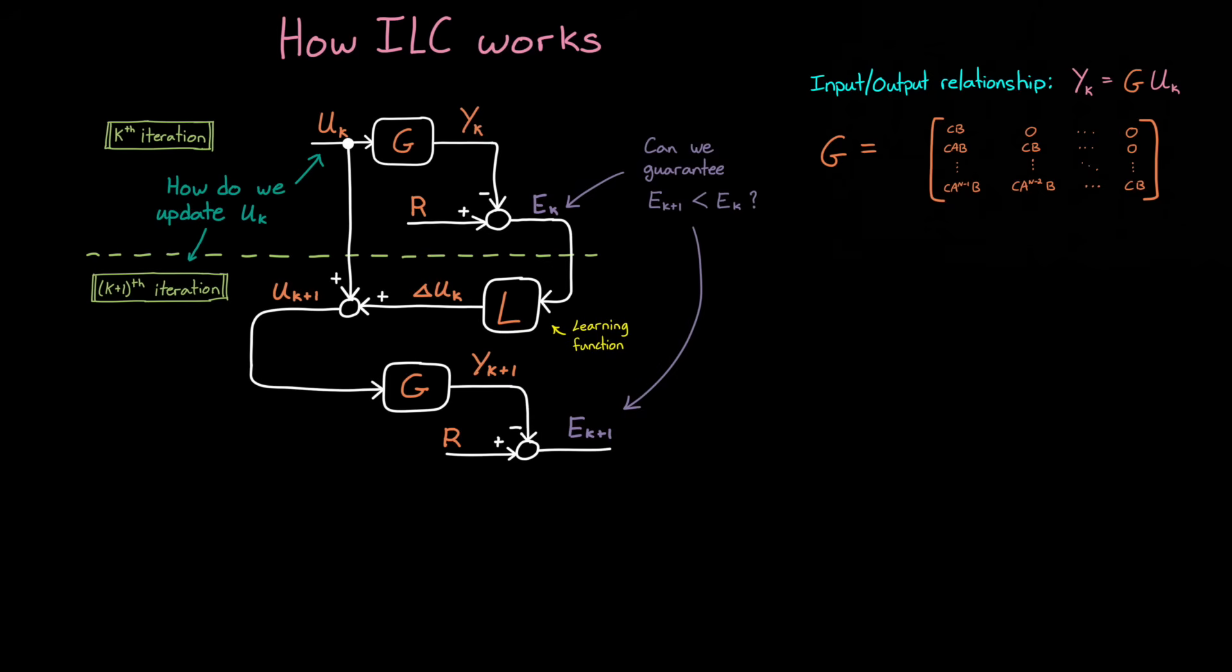But here is the interesting question. Can we guarantee that the error at k plus 1 is always less than the error at k? If so, then we know that u is being adjusted in a way that makes the system better at following the reference, since the error is being reduced. Well, to answer that question, we need to find a function that compares e at k plus 1 to e at k.